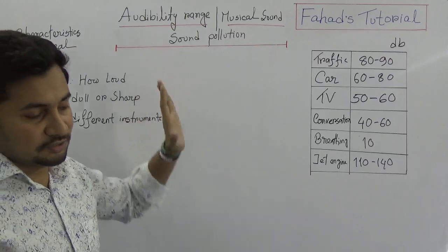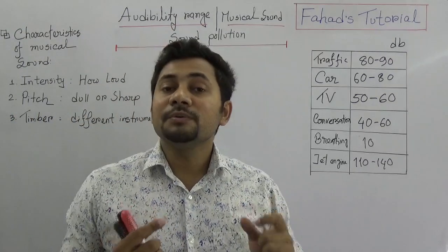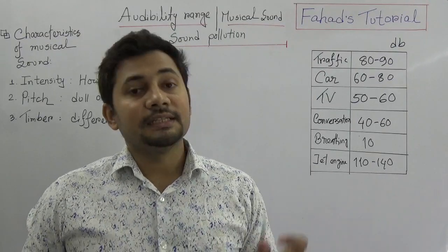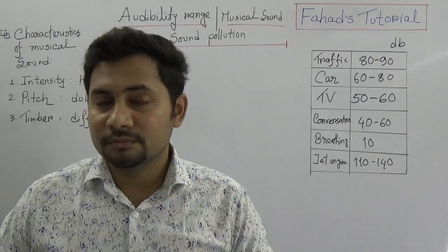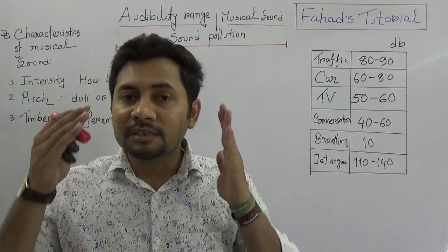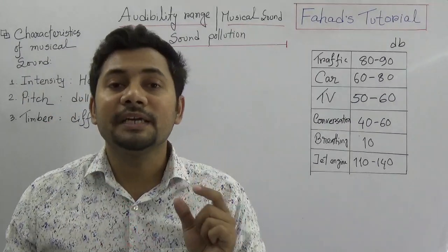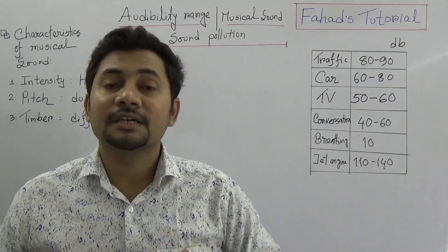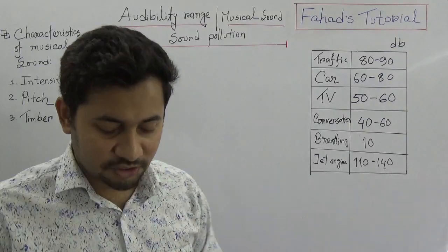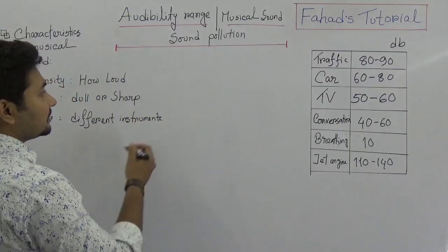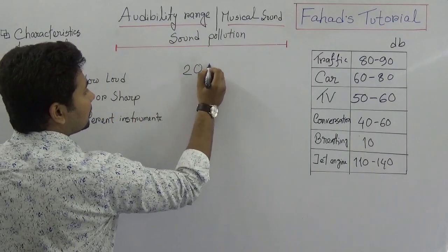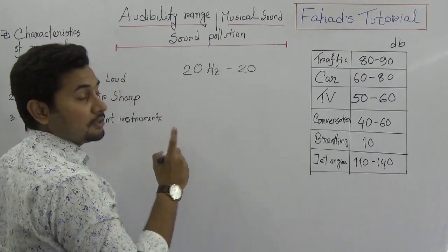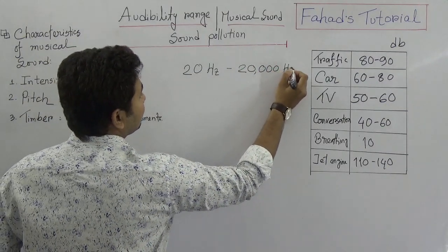What about the audibility range? Do we hear all the sounds in our surroundings? The answer is directly no, because human ears have some limitations. Those limitations on the frequencies of sound are known as the audibility range, and it is between 20 hertz to 20,000 hertz.